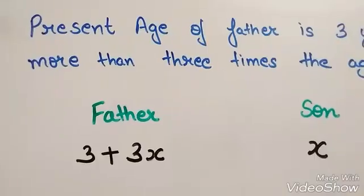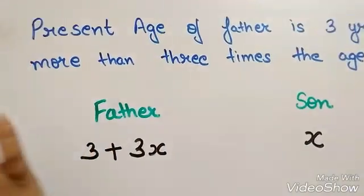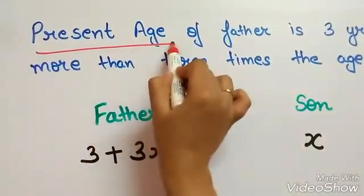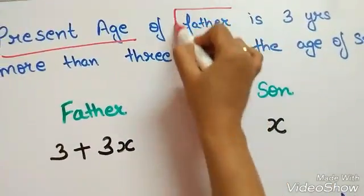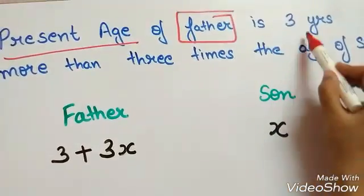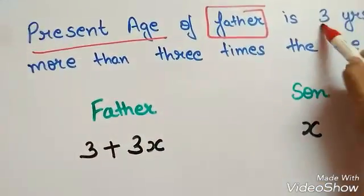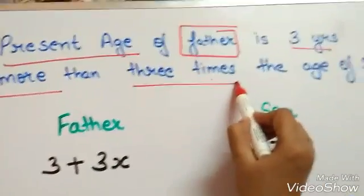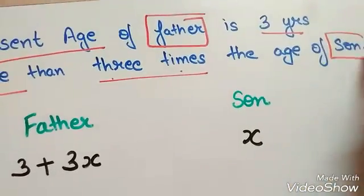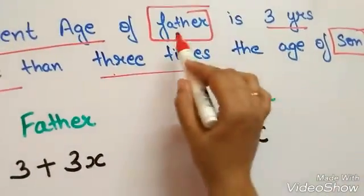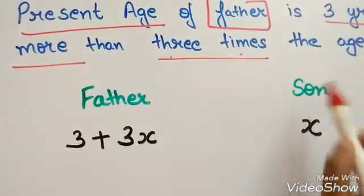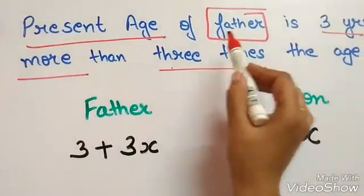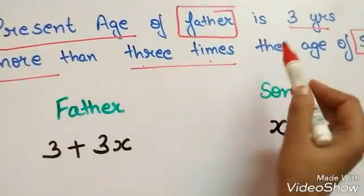To solve such questions, first of all go with the flow of the question. Our question starts with: the present age of father is 3 years more than 3 times the age of son. The main characters of this question are father and son, so write father and son.